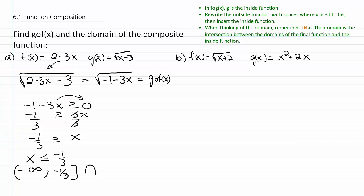That means we need f's domain. The domain of f is all real numbers — there are no restrictions on f. From negative infinity to positive infinity is the domain of f, because there are no fractions in f, no radicals in f, nothing to worry about. You can put anything you want into f.